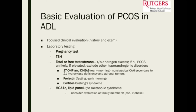Do prolactin testing — it has to be fasting and when the patient is calm. Cortisol testing, the 24-hour urine for Cushing's. And do markers for metabolic syndrome: hemoglobin A1C and a lipid panel. Even consider suggesting family members get tested as well, since metabolic syndrome tends to run in families.